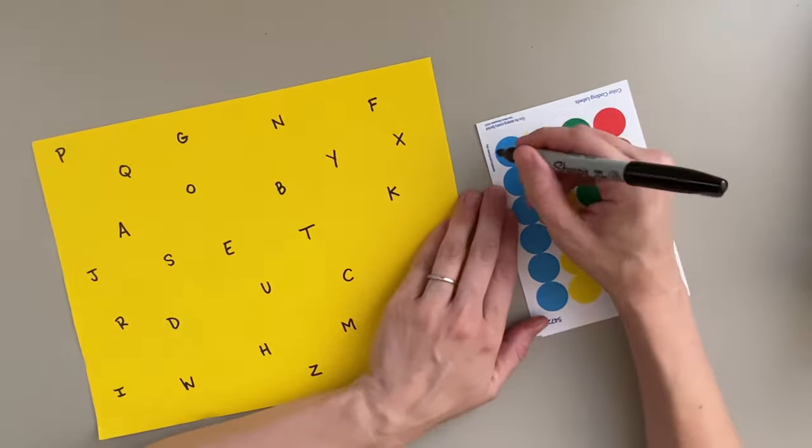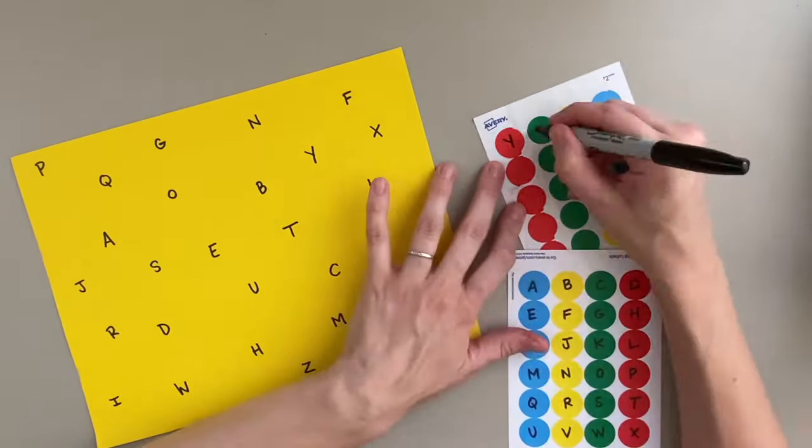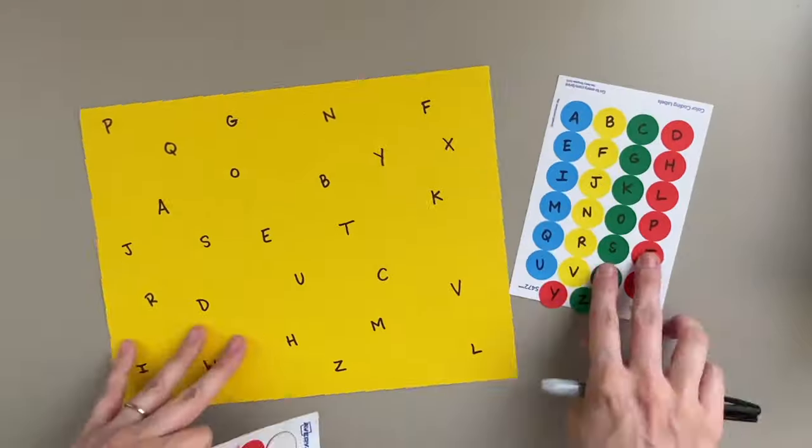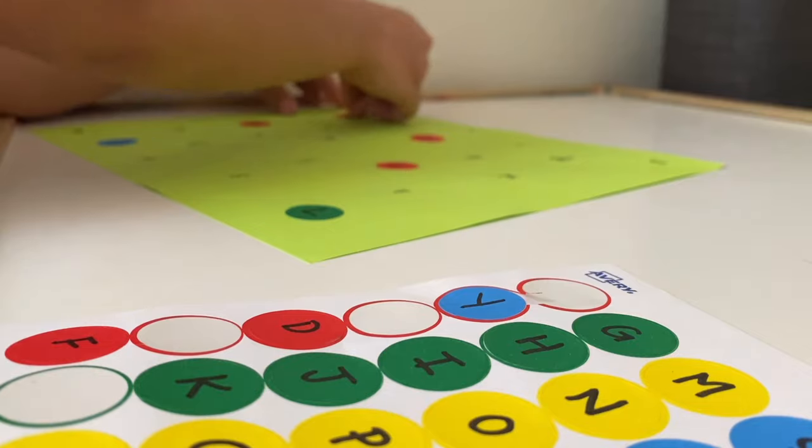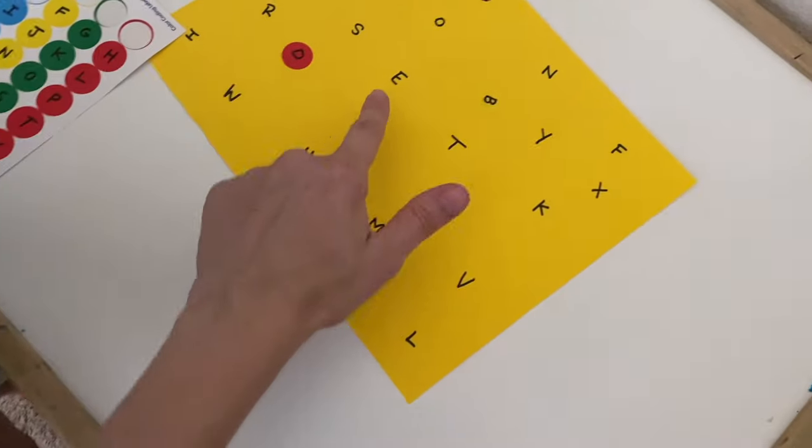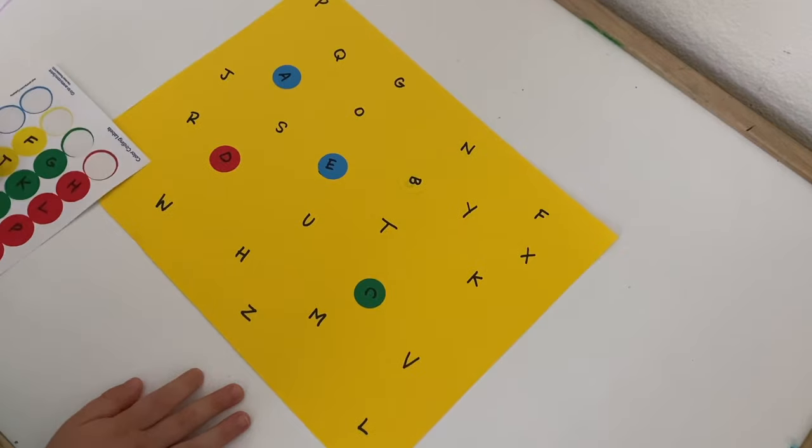You can also mix it up by writing capital letters on the paper and lowercase letters on the stickers, or vice versa, to give it a little challenge for those who are learning to decipher the two. This activity can be done independently by your child or you can guide them along and use it as a lesson in recognizing letters or letter sounds.